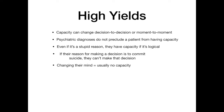Psychiatric diagnoses do not preclude a patient from having capacity. If you're depressed, have schizophrenia, bipolar, or schizoaffective disorder, that does not prevent you from having capacity. In our example, the patient had schizophrenia and still had capacity. Just because somebody has a diagnosis that sounds like their cognition will be altered doesn't mean they can't have capacity. Also, even if it's a stupid reason, they have capacity if it's logical. Even if they're making a terrible decision that puts themselves in danger, they can still have capacity — you don't have to agree with what they're deciding, but they have the right to decide it.